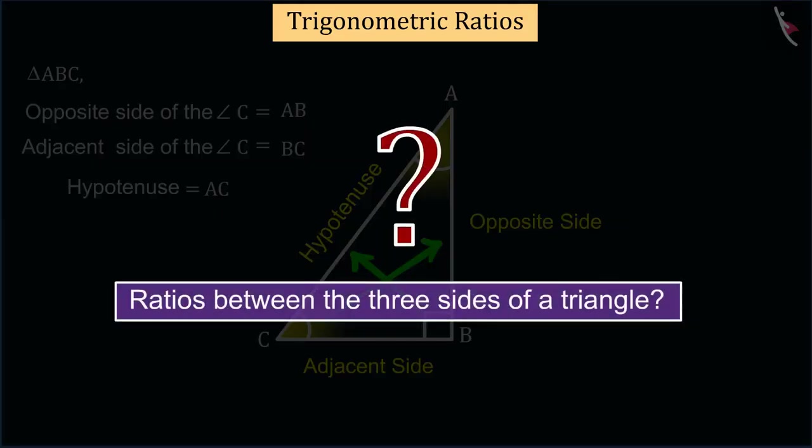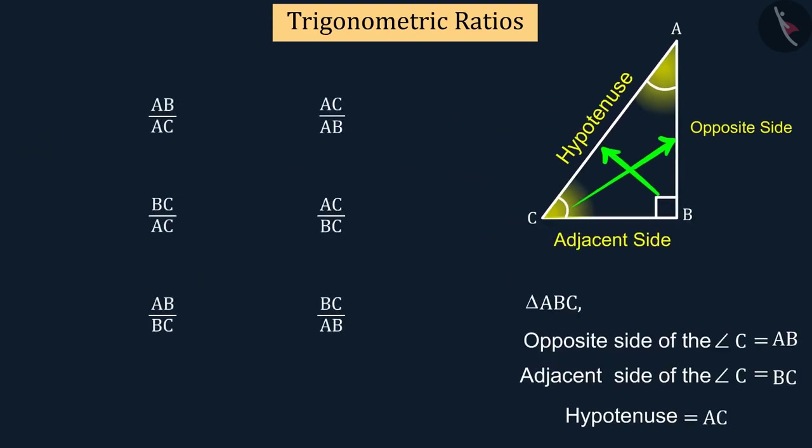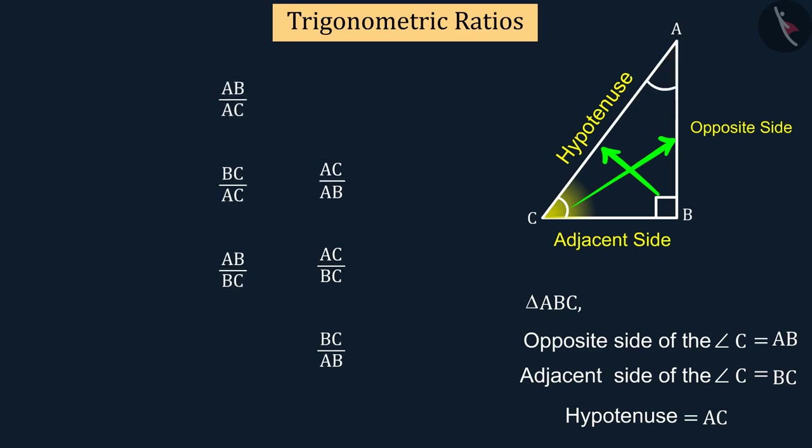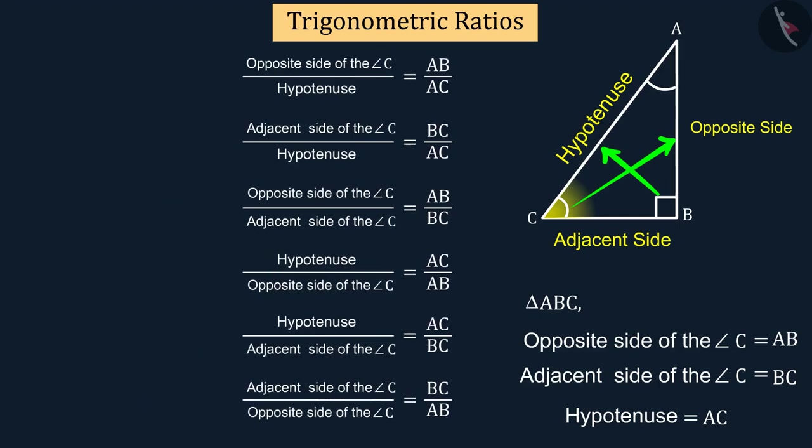How many ratios can be found if you calculate different combinations of ratios between the three sides of a triangle? Let's see. Now, if we write the ratio between the given sides, we get these six ratios. If we study the obtained ratios with respect to angle C, we get these six trigonometric ratios.